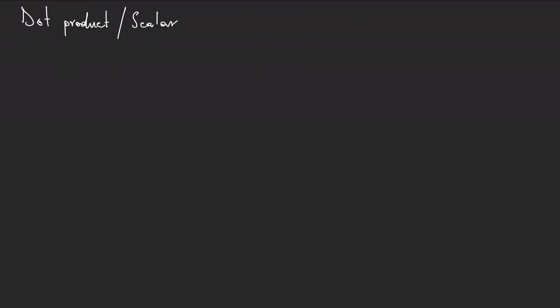We will see what it means. If we have two vectors, vector A and vector B, we can draw them. The angle between these two vectors is angle alpha.